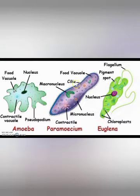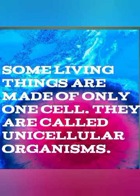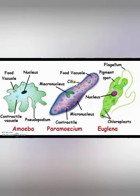First we have to see what unicellular organisms are. As you can see in the picture, these are unicellular, meaning they are made of one cell. The definition of unicellular organism is: some living things are made of only one cell — they are called unicellular organisms.